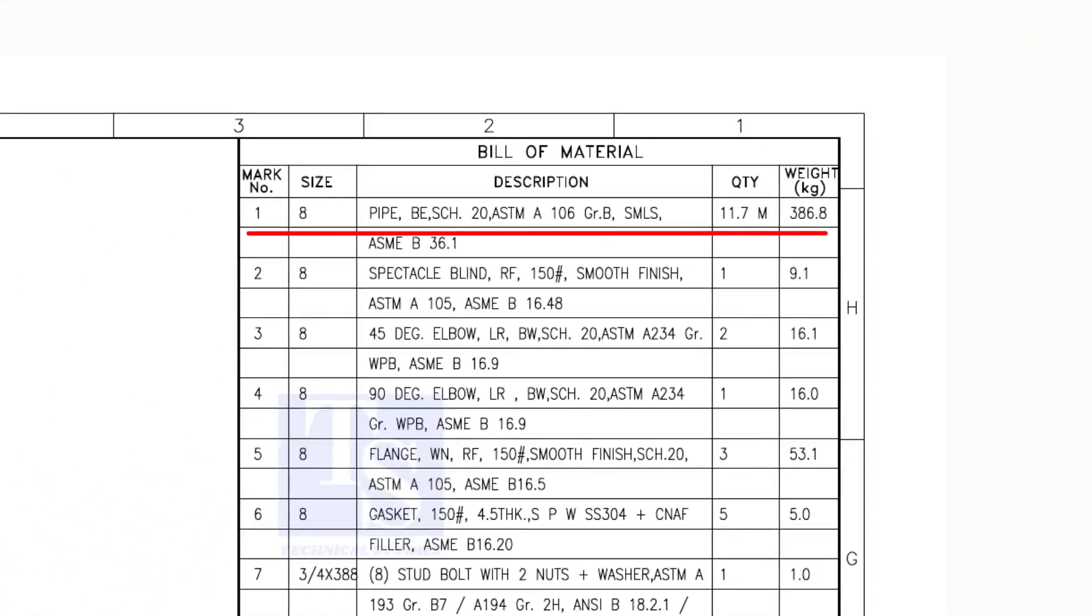As per the list, item number 1 is 8-inch bevel end schedule 20 seamless pipe. Item number 3 is 45-degree long radius butt weld schedule 20 elbow.